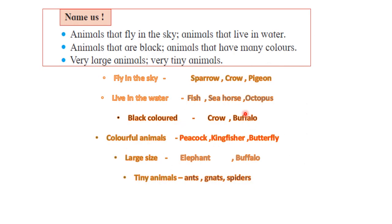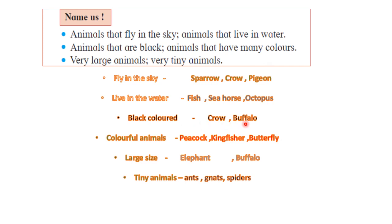Now name some animals in different categories. Animals that can fly in the sky: sparrow, crow, pigeon. Animals that live in the water: fish, seahorse, octopus. Black-colored animals: crow and buffalo.